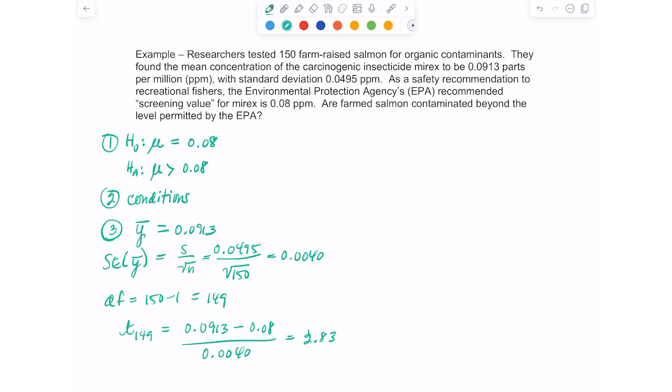So when I create my T model, not normal model, but the T model with 149 degrees of freedom, I know that my mean is going to go in the middle, which is 0.08. And then we would go three standard deviations in either direction. 2.83 tells me I'm going to be 2.83 standard deviations above the mean. And since I'm dealing with greater, I'm going to be shading to the right. So what I'm looking for here is the probability that T is greater than 2.83.